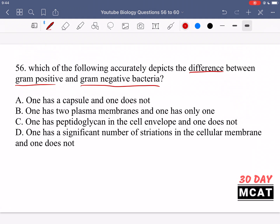Option A says one has a capsule and one does not. The capsule, the outermost covering on the bacteria, can be present in both gram-positive and negative bacteria, so that's not really a difference between them. Option B says one has two plasma membranes and one only has one. That's correct - the negative one has two plasma membranes, the inner and outer, whereas the other one just has one main membrane. So that's our correct answer.